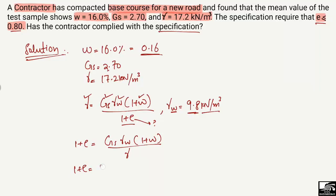Substituting the values: 1 + e = (2.70 × 9.8 × (1 + 0.16)) / 17.2. Here, Gs = 2.70, gamma_w = 9.8 kilonewton per cubic meter, (1 + w) = 1.16, and gamma = 17.2 kilonewton per cubic meter.